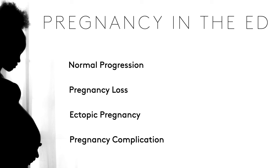There is some degree to which vaginal spotting and cramping can be normal in early pregnancy. We need to decipher whether this is within the spectrum of normal or something to be worried about. Option two — which many patients are concerned about — is pregnancy loss. A patient may know she's pregnant and is having pain or bleeding, and is worried she may be having a miscarriage.